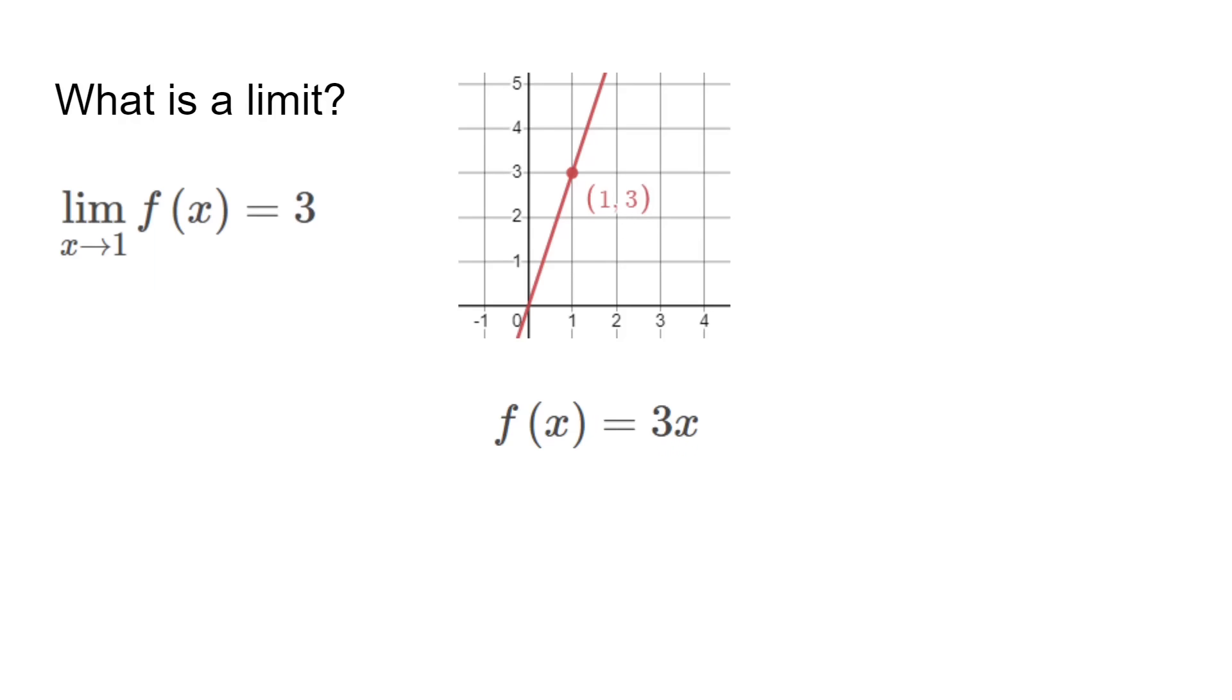Now if we have a piecewise function where a point doesn't exist at (1,3), the limit is still 3. This is because the graph continues to approach 3 when x approaches 1. Limits are all about the point being approached.